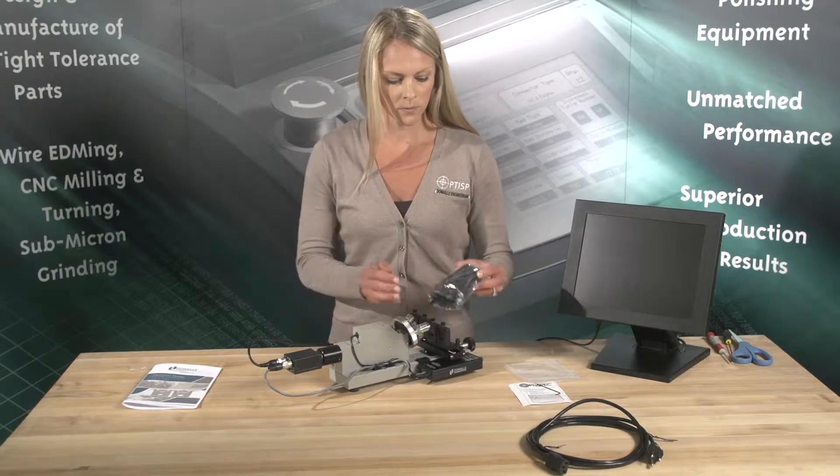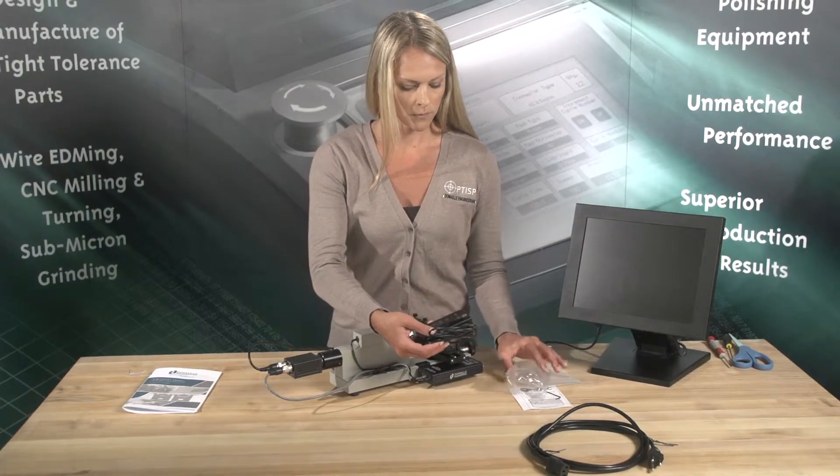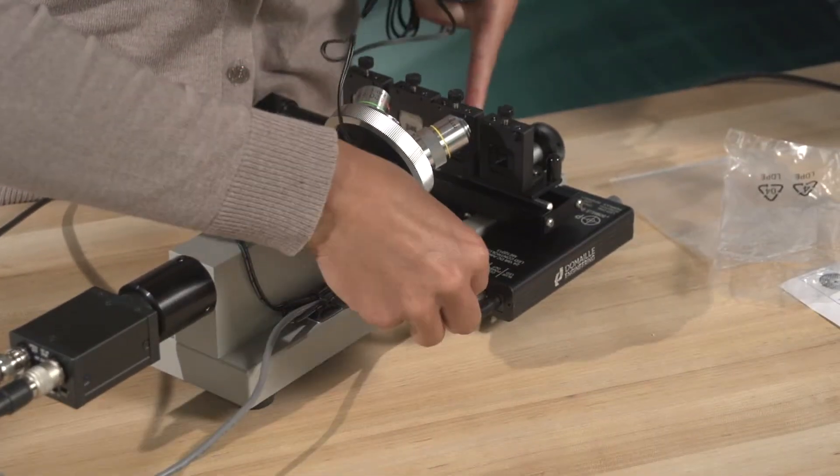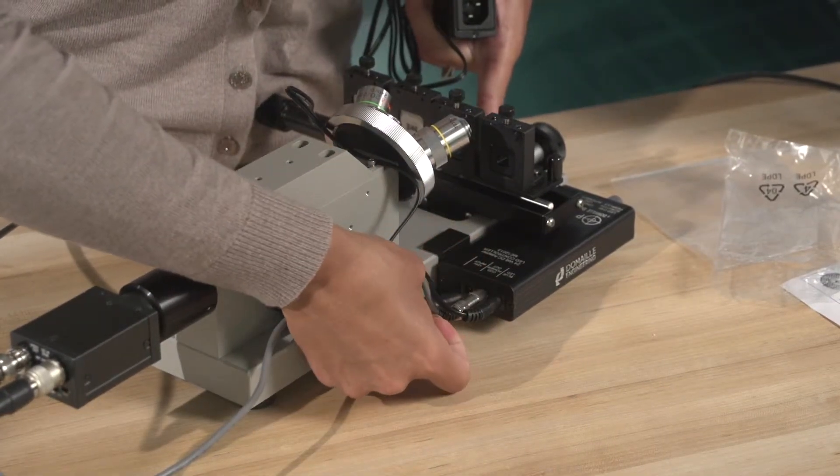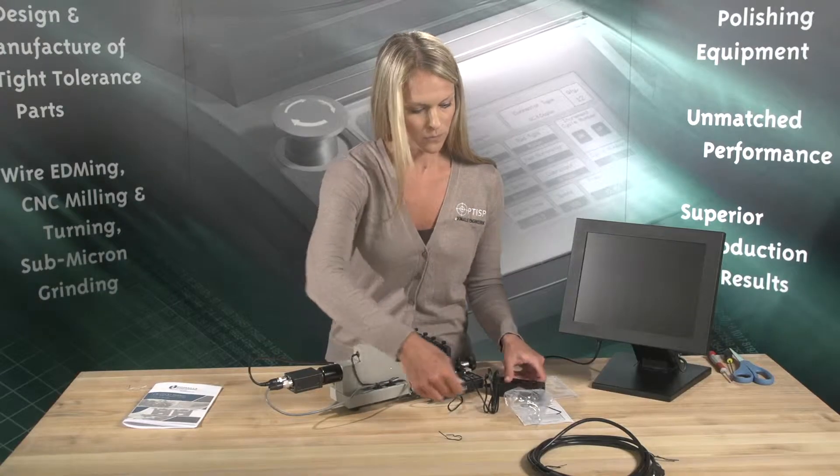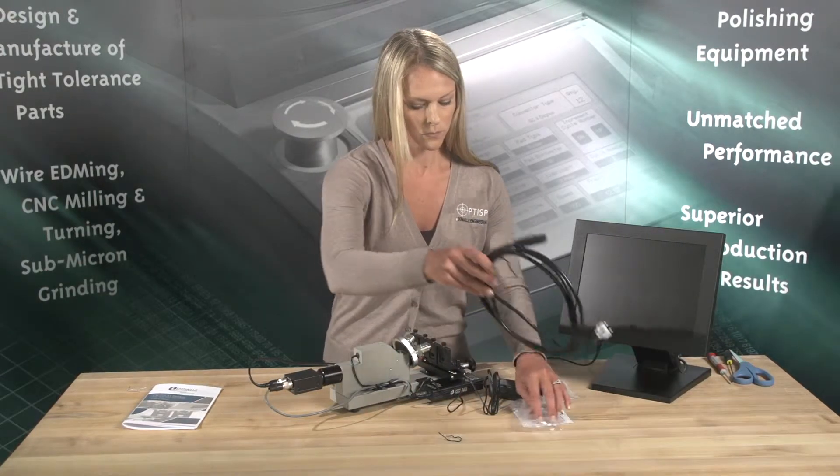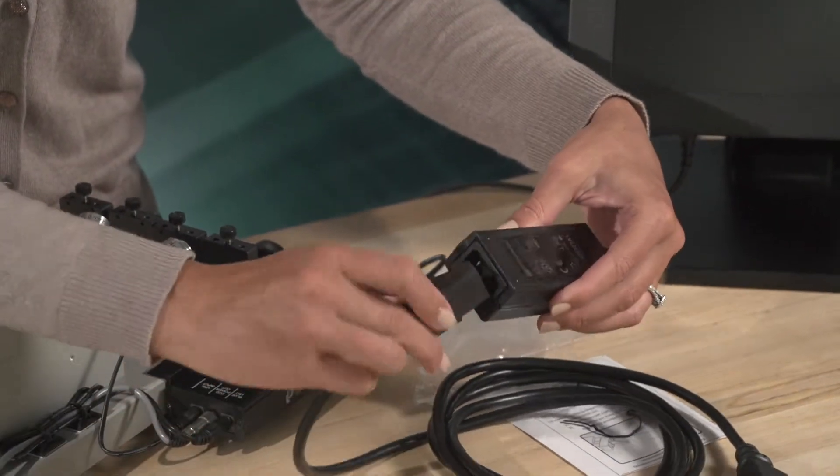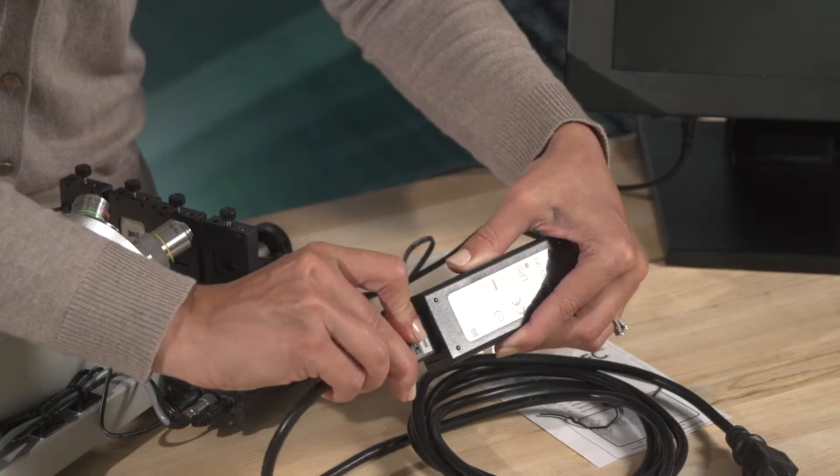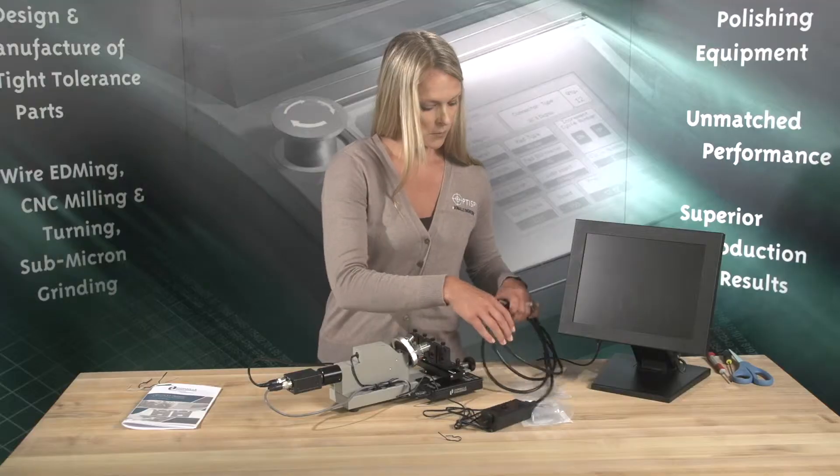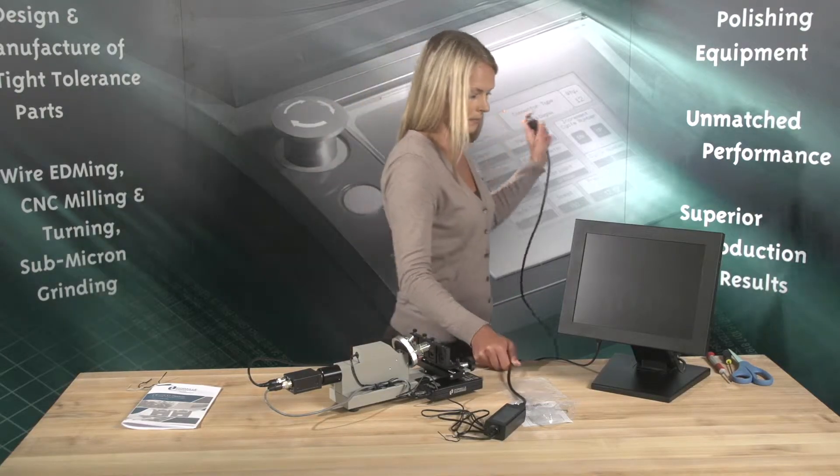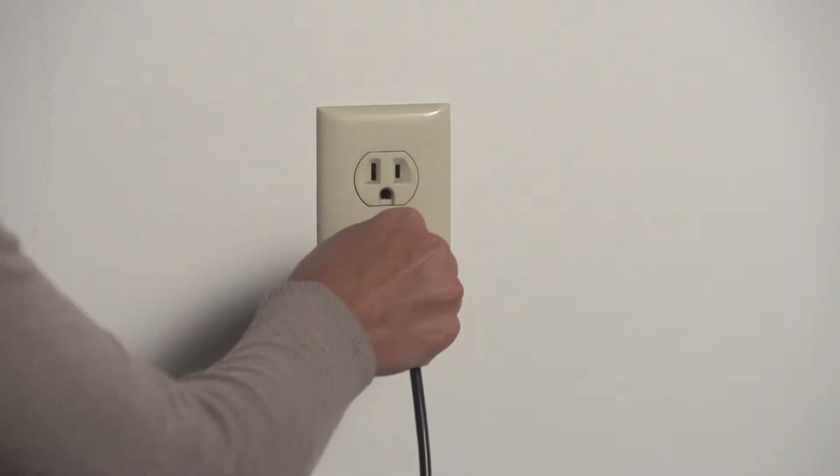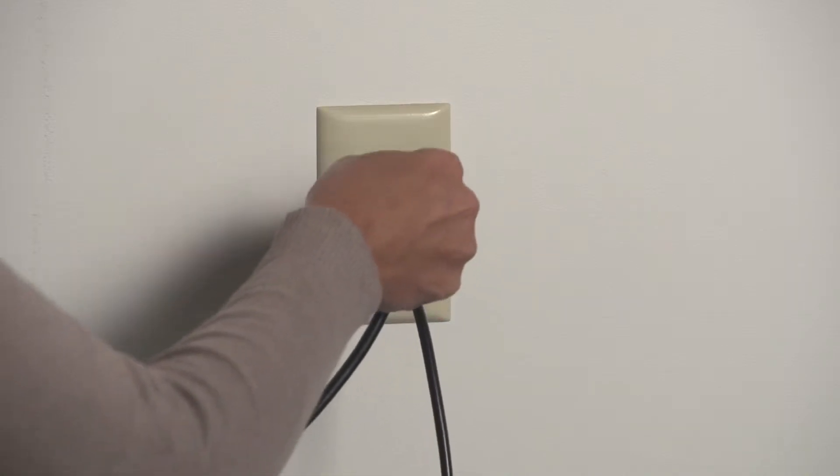Then, plug the power cable into the back of the LED controller. Now, plug in both cord ends into a 120-volt outlet. Once all electrical connections have been made, you are ready to begin finding an image on a fiber connector.